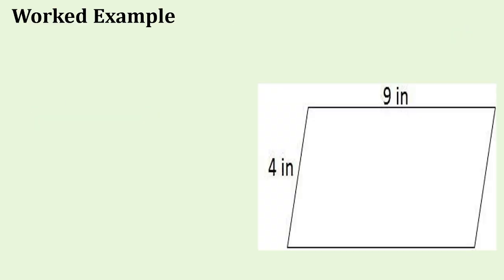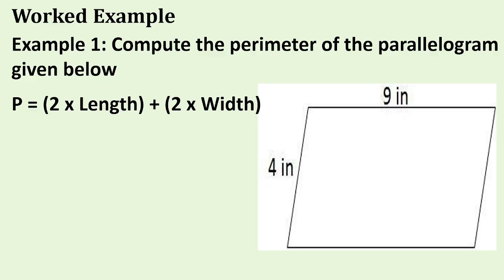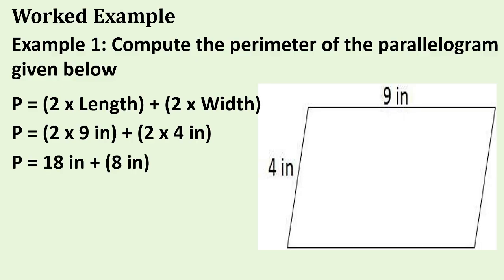Worked example. Example 1: Compute the perimeter of the parallelogram given below. Formula: P = 2L + 2W. Perimeter equals 2 times 9 inches plus 2 times 4 inches. 2 times 9 equals 18, and 2 times 4 equals 8. 18 plus 8 equals 26. The answer is 26 inches.